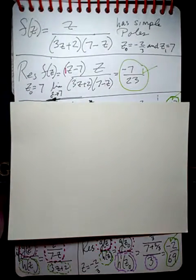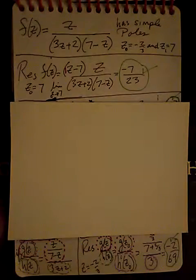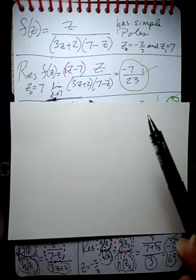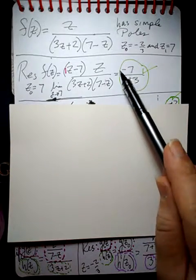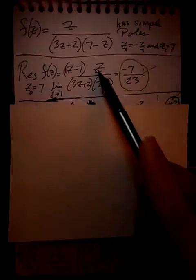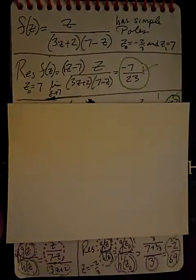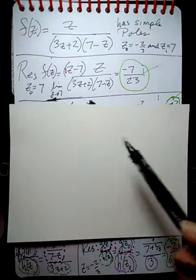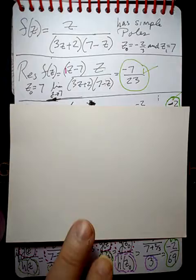So what we want to do is figure out the residue of the function. We'll do z equals seven first. Multiply through by z minus seven. Remember the coefficient has to be one, so this will cancel to give you a negative one. Then plug seven into the z right here — take the limit as z goes to seven. When we plug seven in here and seven in here, we'll get negative seven over 23.